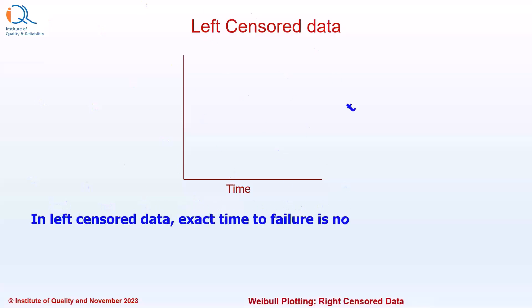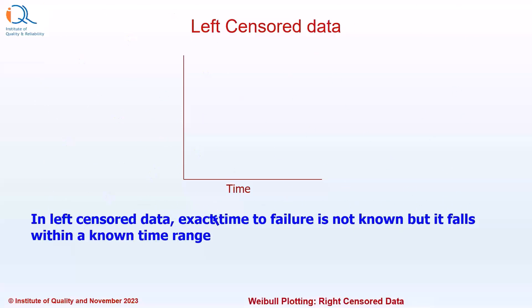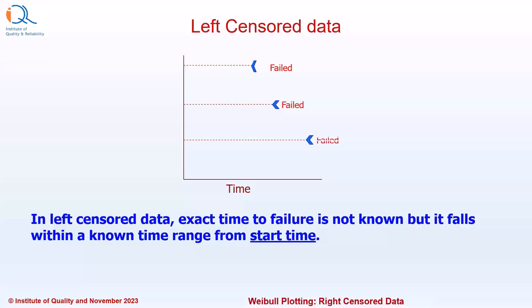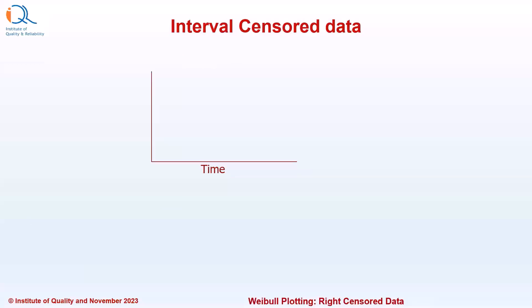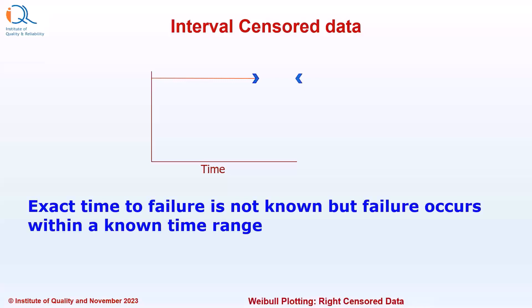Let us now look at Left Censored Data. In Left Censored Data, the exact time to failure is not known, but it fails within a known time range from the start time. For example, there is a component which has failed at a given time, but we don't know exactly when it failed from the start time — similarly for the second and third components. Another type of data is Interval Censored Data. In this type, the exact time to failure is not known, but failure occurs within a known time range. It is very important to understand the type of data because the procedure depends on it.